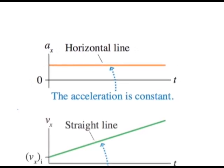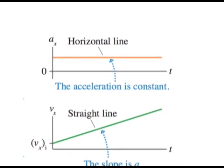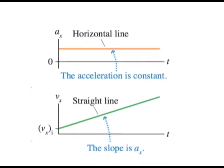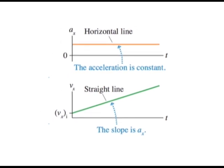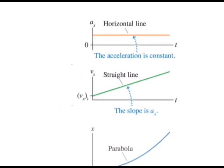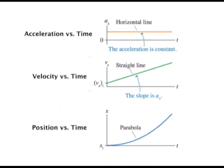So if the acceleration is constant, the velocity is constantly changing, which means I'm going to have a straight line, but it's going to have a slope associated with it. And if the velocity is constantly changing, if I draw a position graph, the position graph is going to be curving up because the slope of the graph is constantly changing.